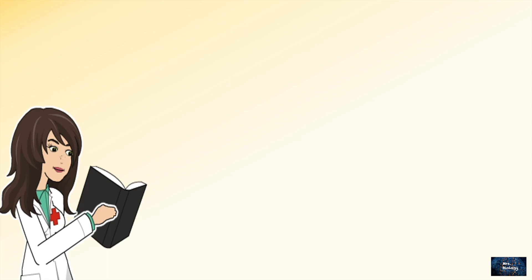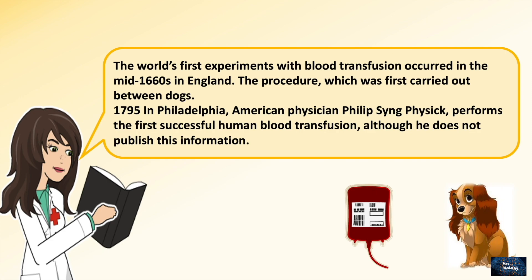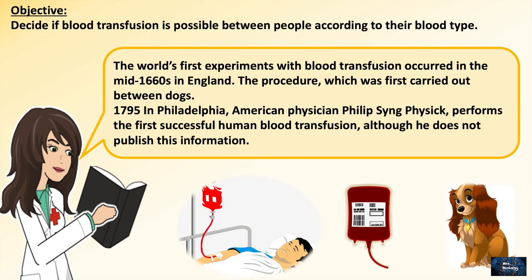From a long time, blood transfusion was a vital way to help save lives. The world's first experiment with blood transfusion occurred in the mid-1660s, which was first carried out between dogs. In 1795, an American physician called Philip Singh performed the first successful human blood transfusion. For that, we should know the relation between this process and the different blood types.